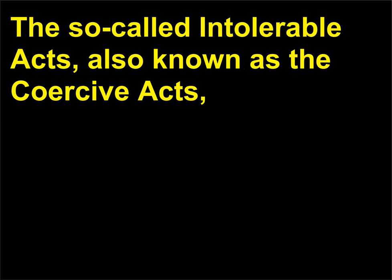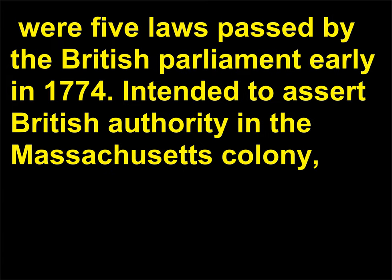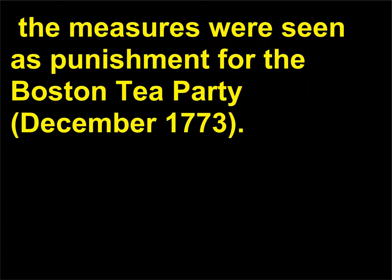The so-called Intolerable Acts, also known as the Coercive Acts, were five laws passed by the British Parliament early in 1774, intended to assert British authority in the Massachusetts colony. The measures were seen as punishment for the Boston Tea Party, December 1773.